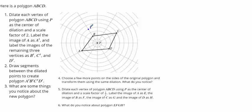For A, it's four units from P, and four times two is eight — so we go to eight, that's A prime. D is three units from P, and three times two is six — that's D prime. C is five units from P, and five times two is ten — that's C prime.